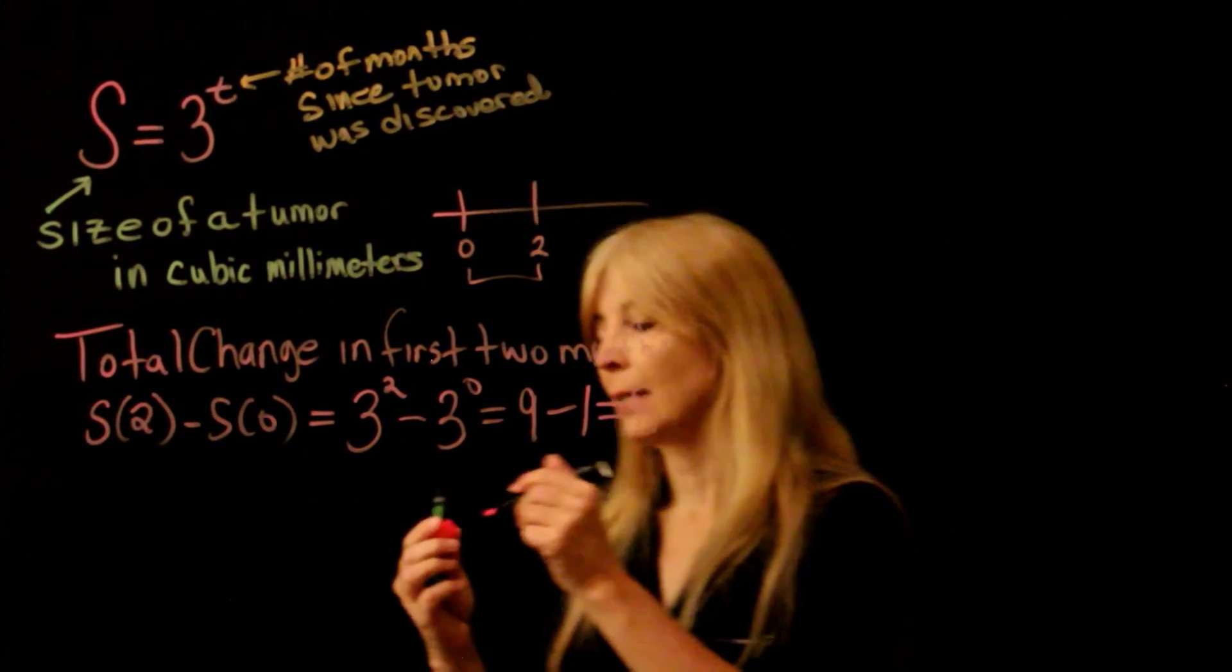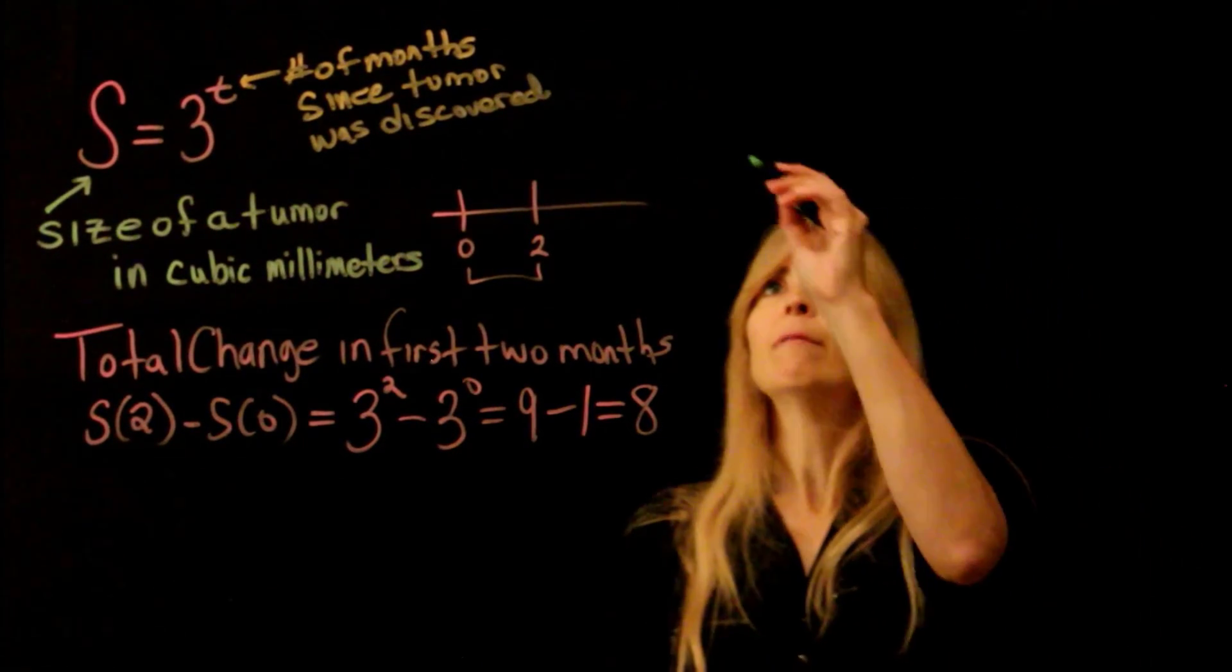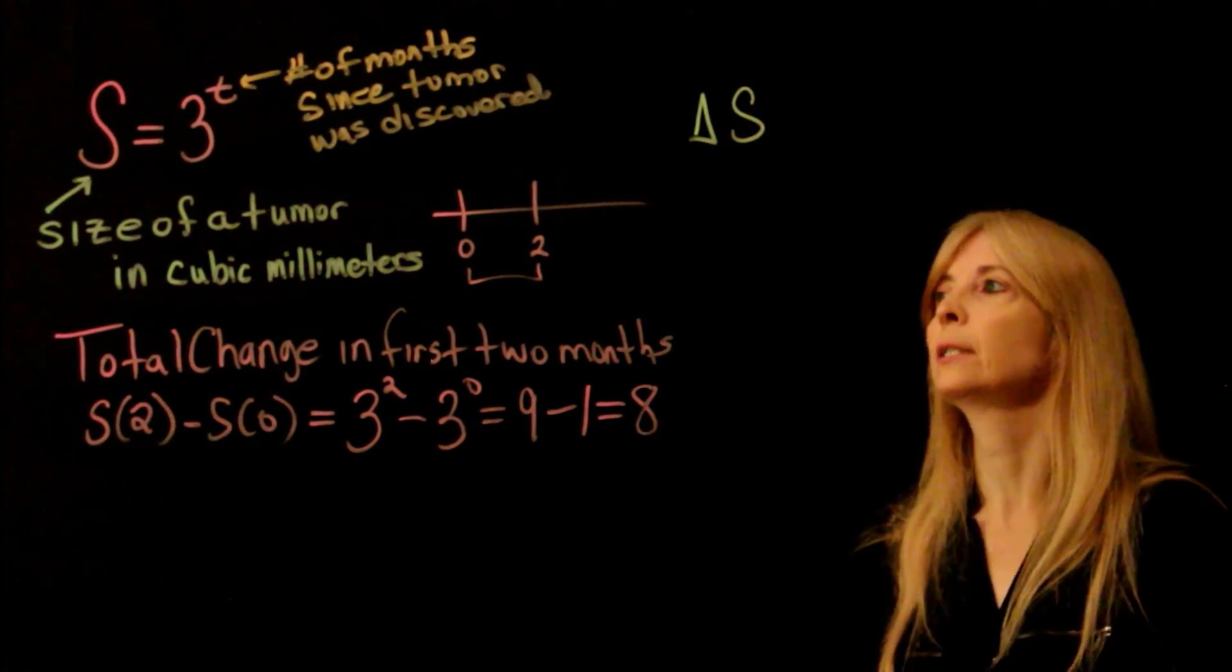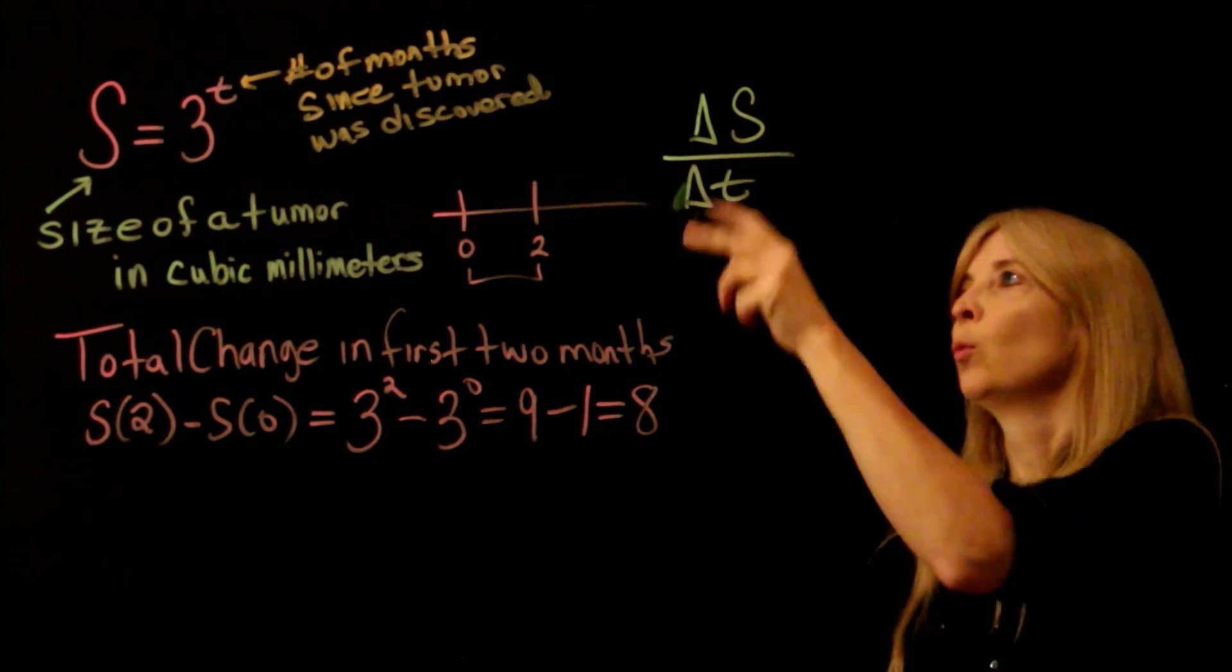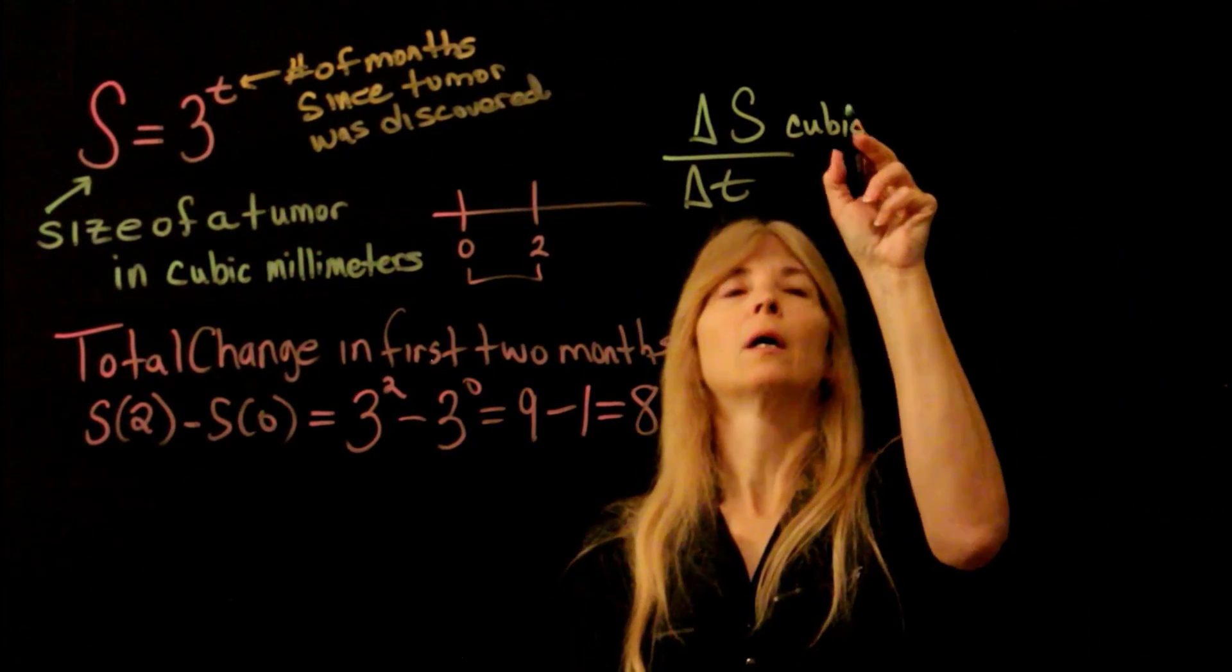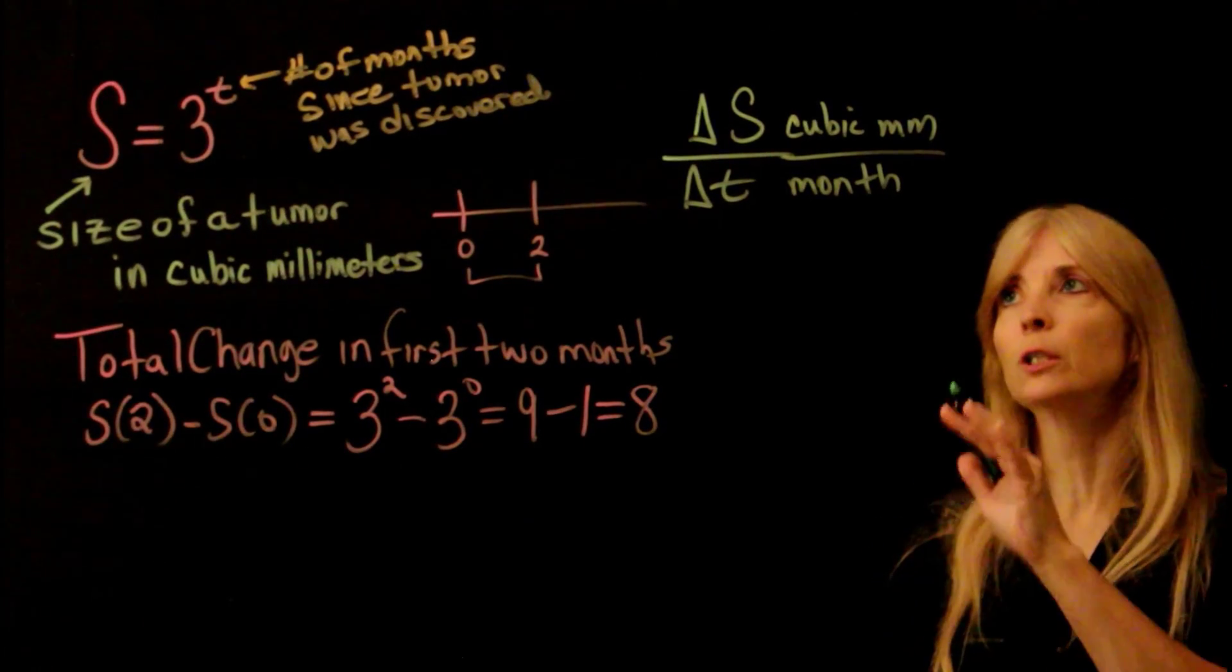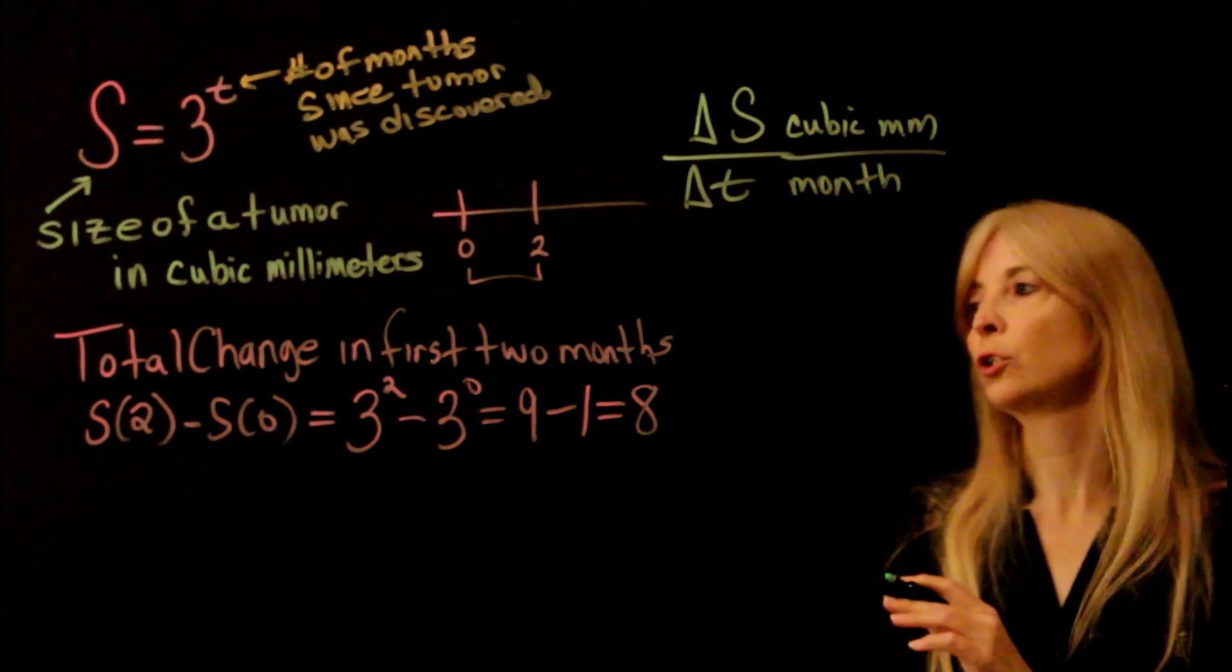All right, then it asks for you to find the average rate of change. Well, remember the average rate of change is going to be the change in y, but in this case my y is S, the size of the tumor, over the change in time, which is months. So it might be nice to actually write cubic millimeters per month, because that way I know how my units will be.